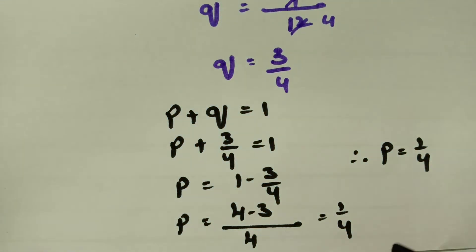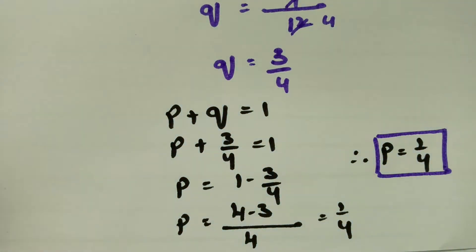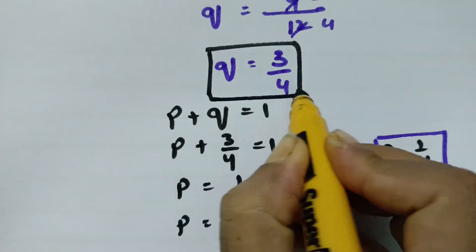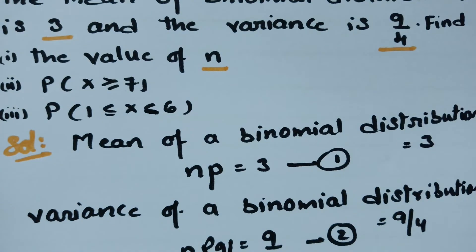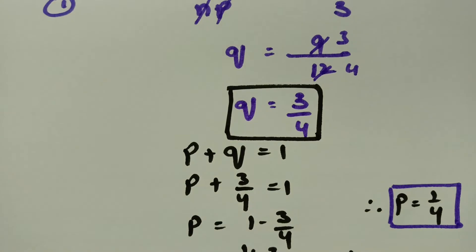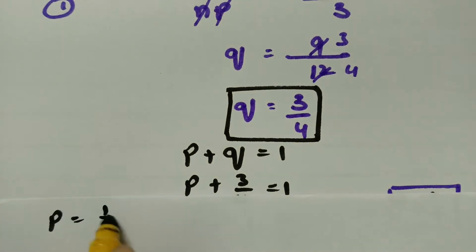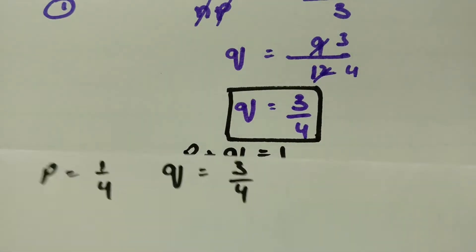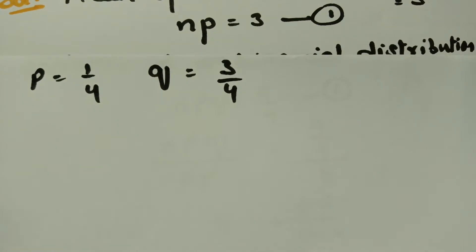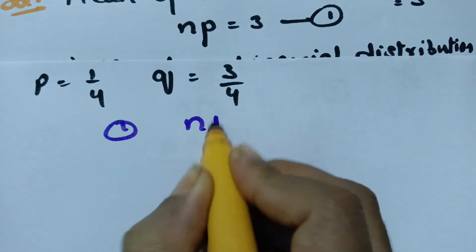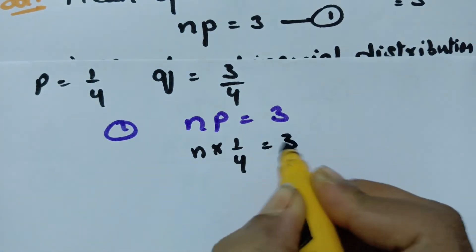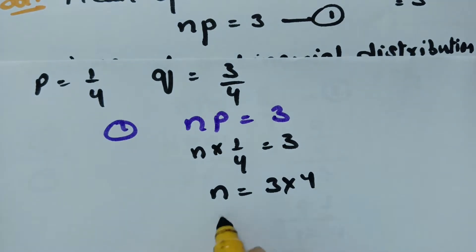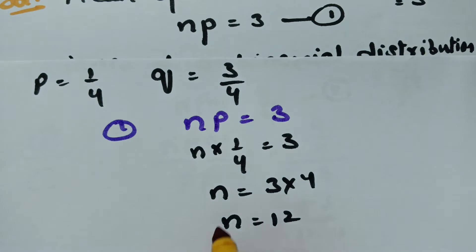We got p as 1 by 4 and q as 3 by 4. Now we have to calculate the value of n. Using equation 1, np is equal to 3. Substituting the value of p as 1 by 4, n into 1 by 4 equals 3, so n is equal to 3 into 4, which gives n equal to 12. Therefore, we got the value of n as 12.